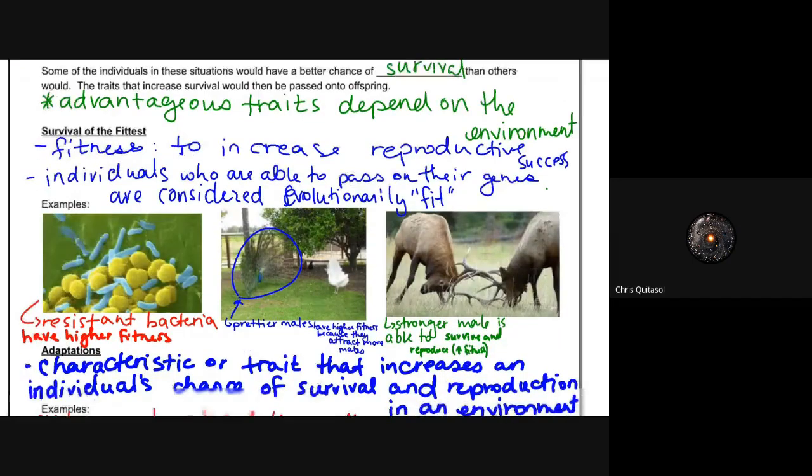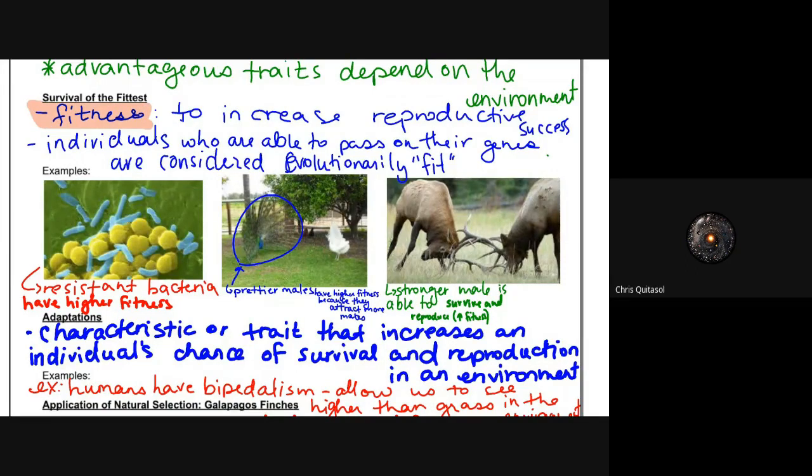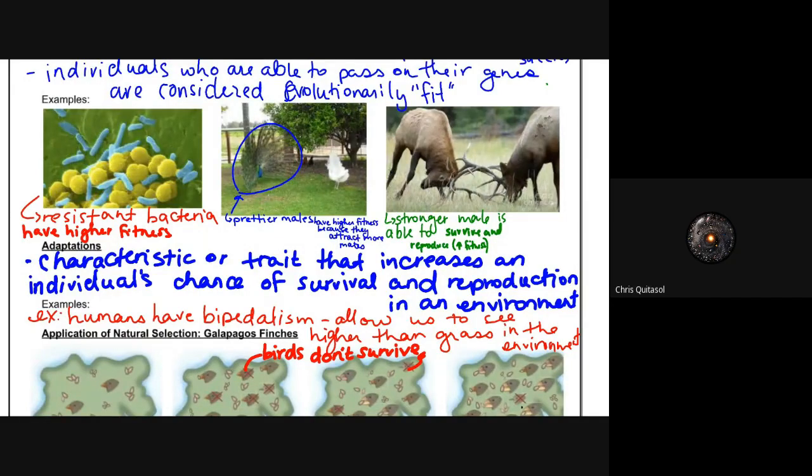This leads to the idea of survival of the fittest. Fitness is the idea that it increases reproductive success. If a species or individual is deemed to be fit, they have a higher chance at reproducing, and that higher chance of reproducing means they have a higher chance of passing on those traits. It's like a self-fulfilling prophecy—it's cyclical in nature. Some examples: bacterial growth that is resistant to specific types of antibiotics. They have a higher fitness because they are able to survive and pass their genes on.